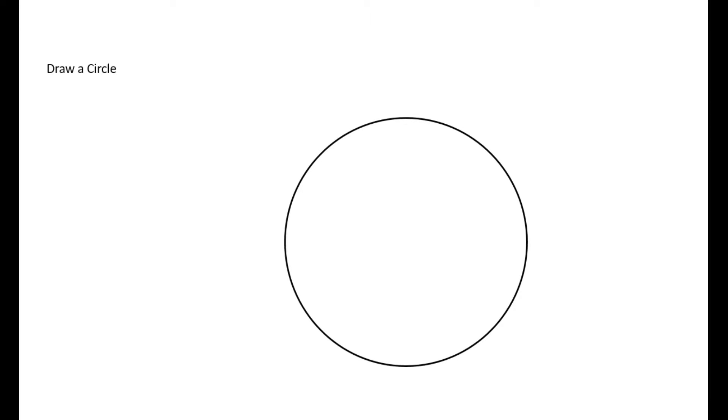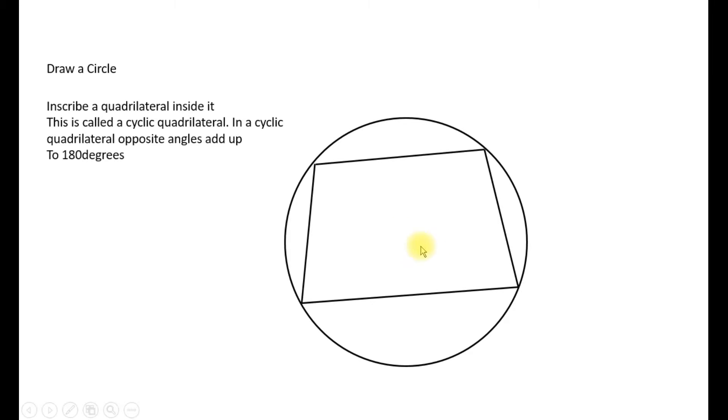We draw a circle and inscribe a quadrilateral inside the circle. This type of quadrilateral is known as a cyclic quadrilateral. Cyclic refers to the fact that all the vertices lie on a circle and one of the characteristics is that the sum of the opposite angles add up to 180 degrees.